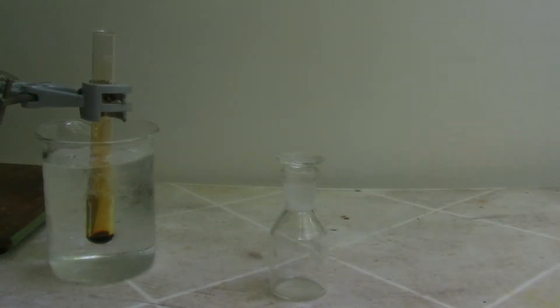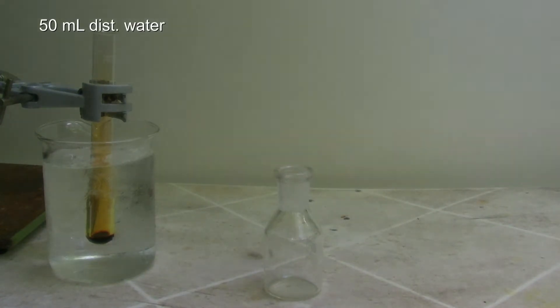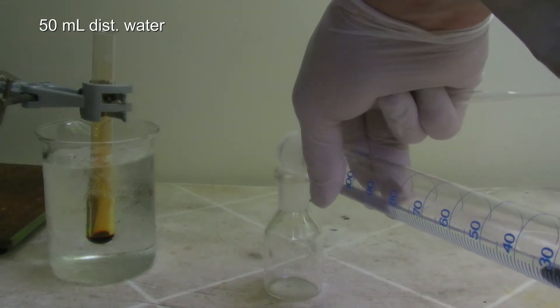The bromine water is prepared in a flask with a grease stopper. For this, 50 ml of distilled water are used, but a larger amount could be prepared.